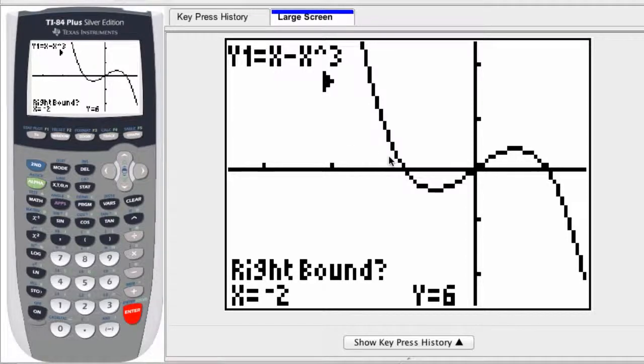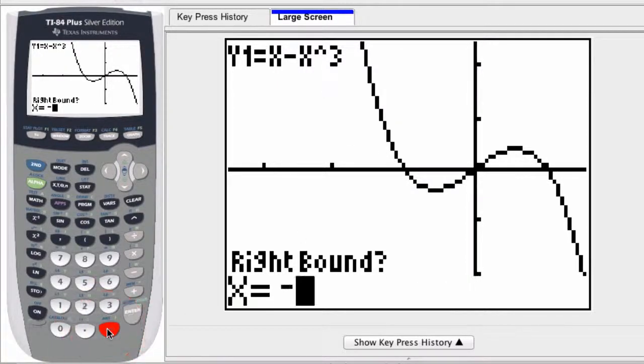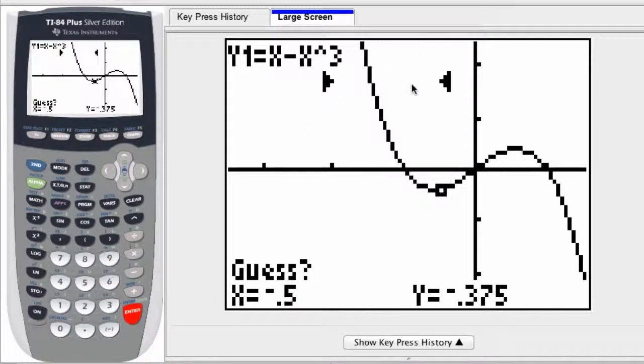It shows you this is the interval right here. Now you can see the graph's coming down, the y values are coming down. Eventually it hits the x-axis and that's when y is zero. So basically this option is finding your x-intercept.